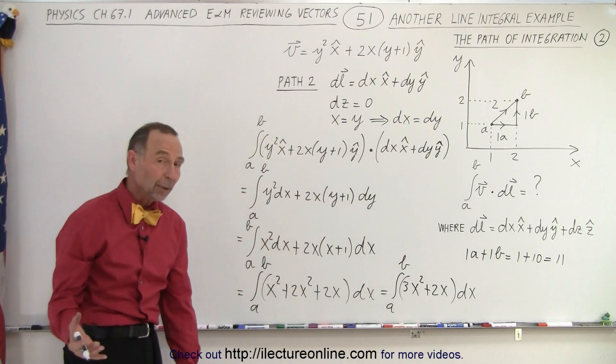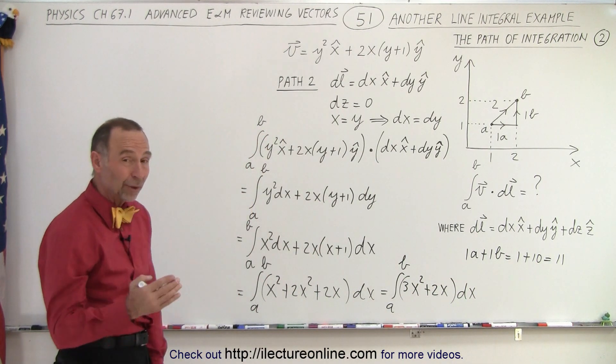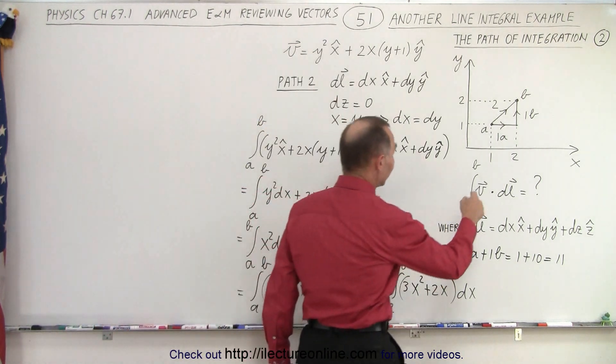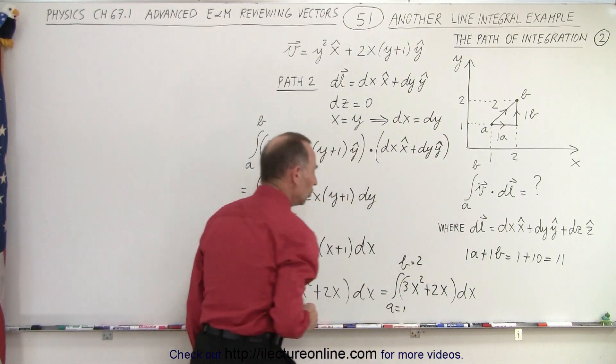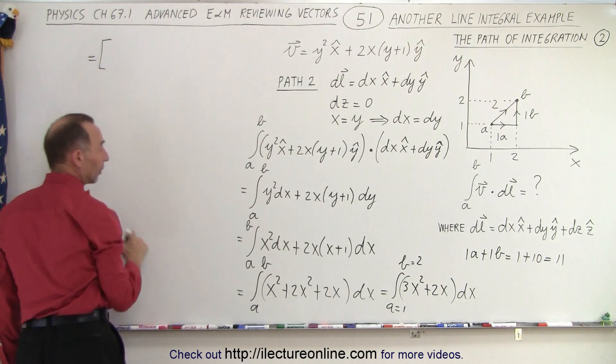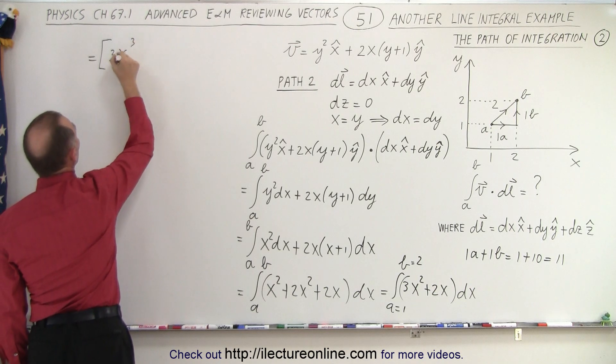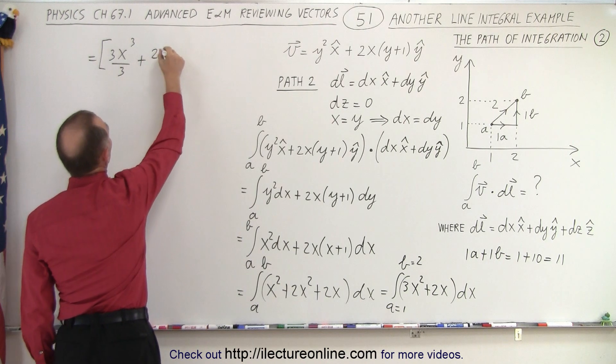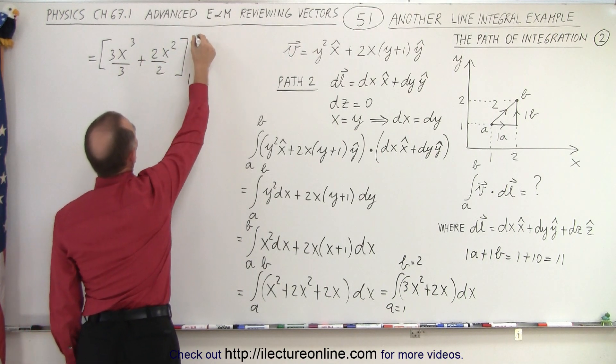Now we're ready to integrate that. Of course we would like to know what the limits are. Now since we have everything in terms of x, the limits for x will be still from 1 to 2. So A is equal to 1 and B is equal to 2. Those are my limits. So this is going to be equal to, when we integrate 3x squared, that becomes 3x cubed over 3, plus 2x squared over 2, evaluated from 1 to 2.